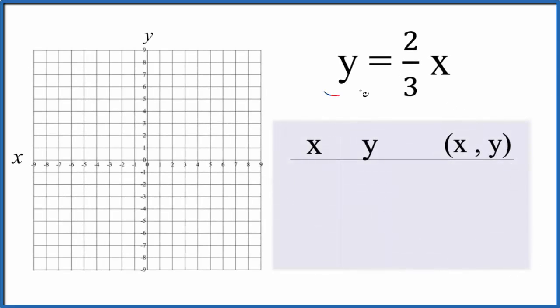Let's graph the linear equation y equals 2/3 x. And we're going to do it two ways. First we'll use a table of values and plot those on our graph here. Then we'll use slope intercept formula to check our work.